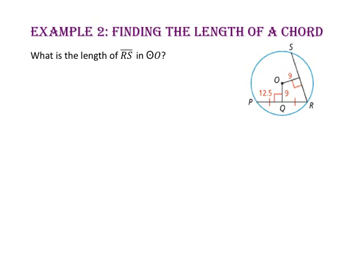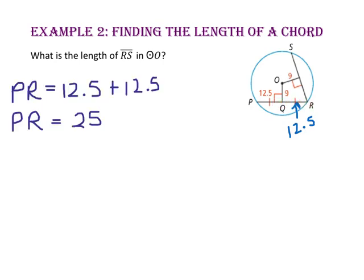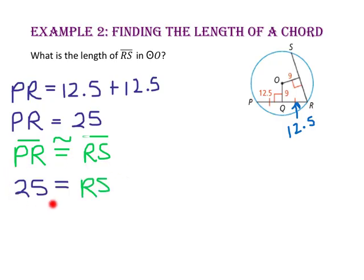In example 2, we will find the length of a chord. What is the length of segment RS in circle O? Since the length of segment OQ is 9 units, segment PR is 9 units away from the center. Since segment RS is also 9 units from the center, the chords are equal in length. Since segment PQ is 12.5, segment RQ is also 12.5 because of the congruent marks. The length of segment PR equals 12.5 plus 12.5, so segment PR is 25 units. Since segment PR is the same distance from the center as segment RS, they are congruent. Substituting 25 for the length of segment PR, the length of segment RS is also 25.